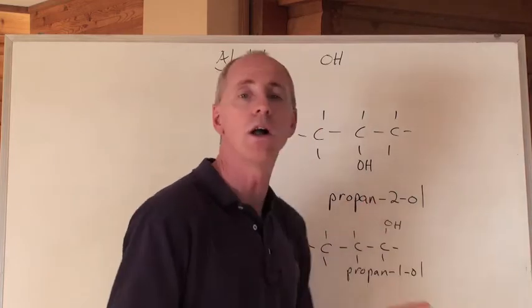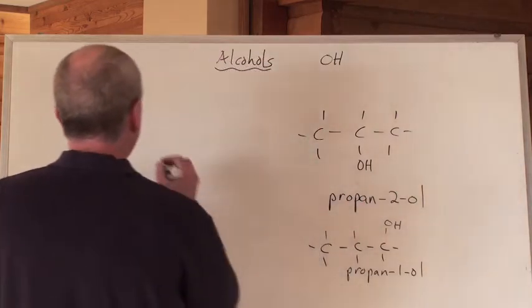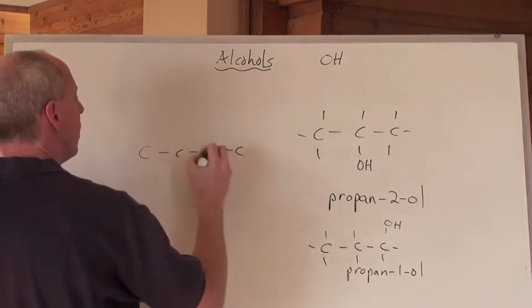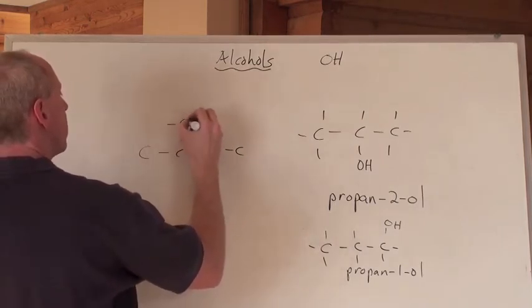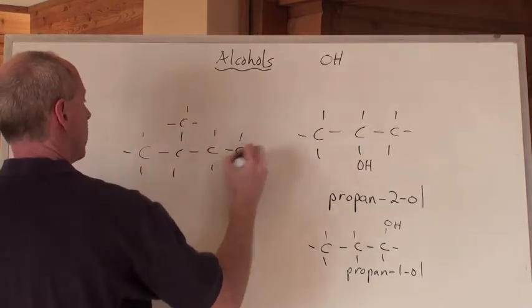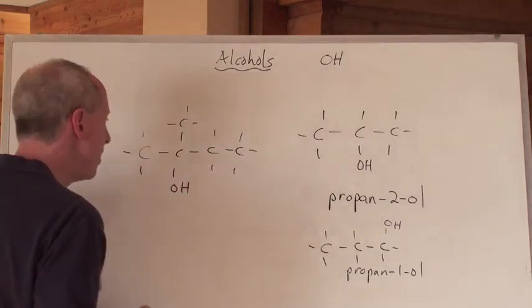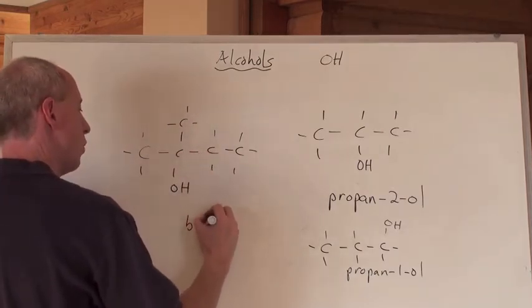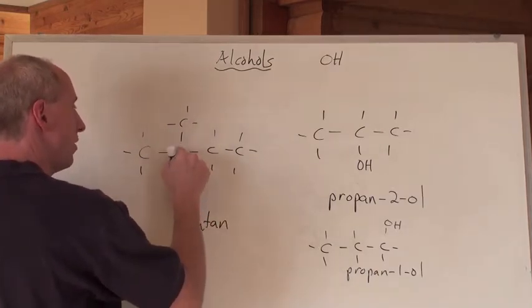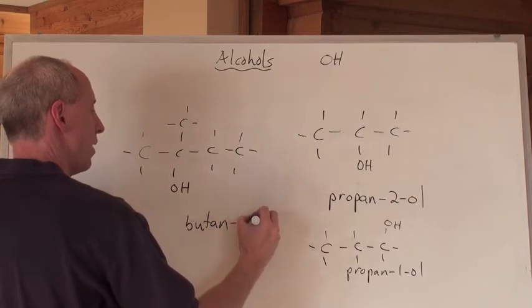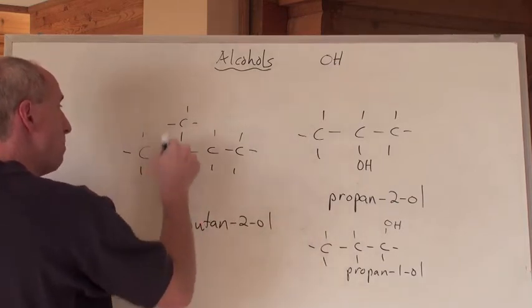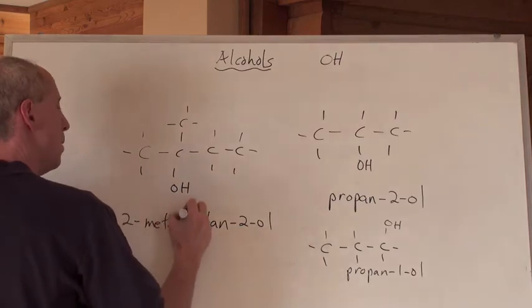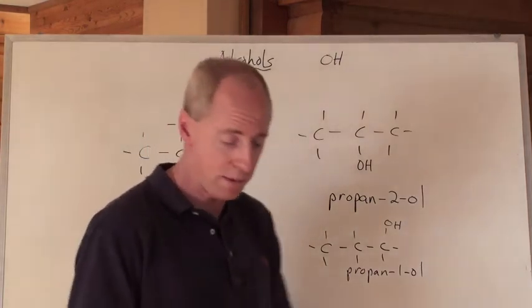Propan-2-ol is a secondary alcohol. What's the name of this alcohol right here? This is one, two, three, four longest chain. So it would be a butan. The OL is at the second carbon, so it's a butan-2-ol. But there's a methyl group on the second carbon as well, so it's a 2-methyl-butan-2-ol. Hope that makes sense.